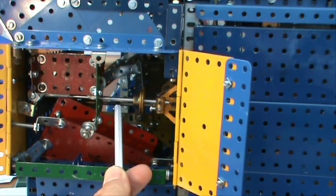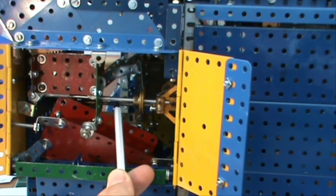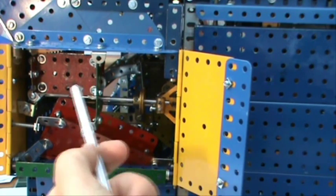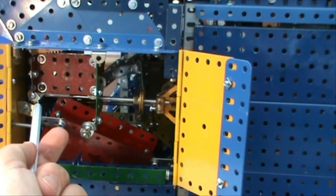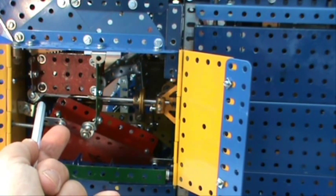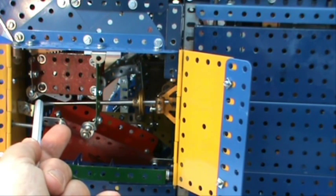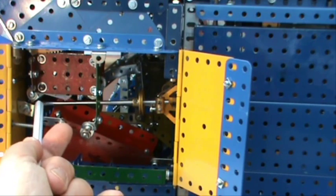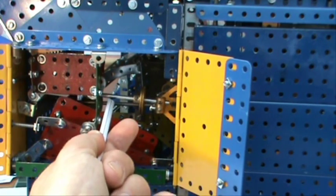If this rod drops down, the sequencer motor will start. It can't drop down while it's being held back by this piece here. When a coin falls in, it's released. Even a small coin will release the rod.